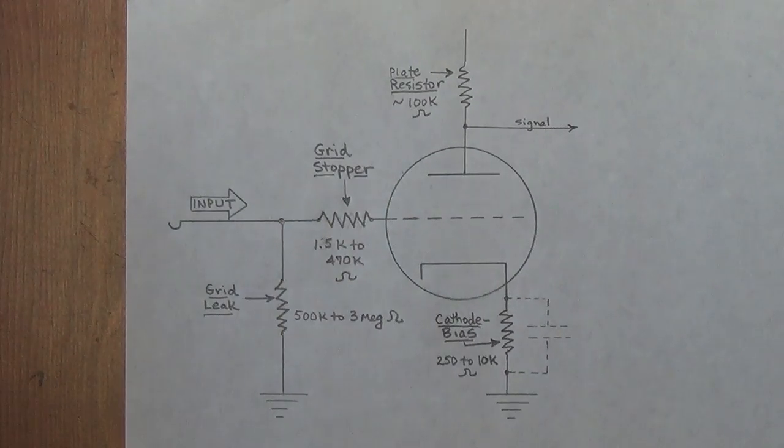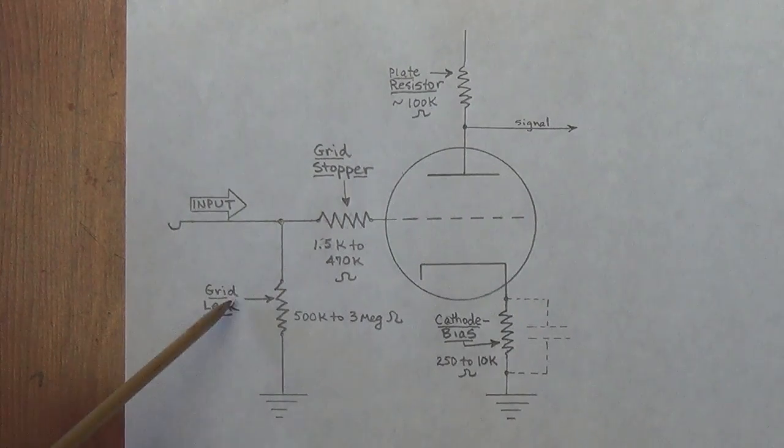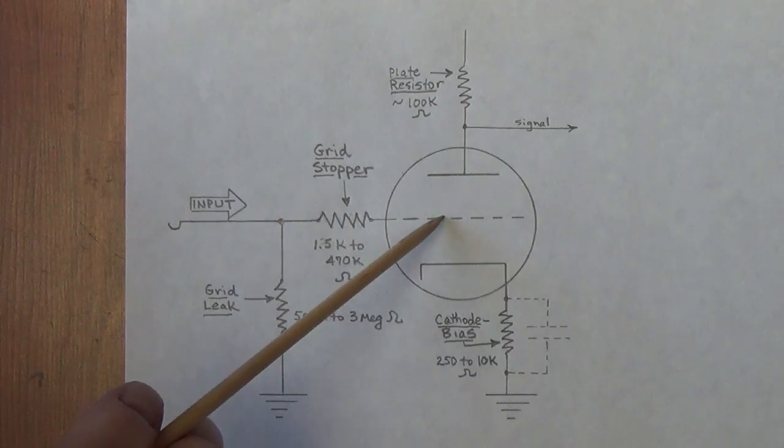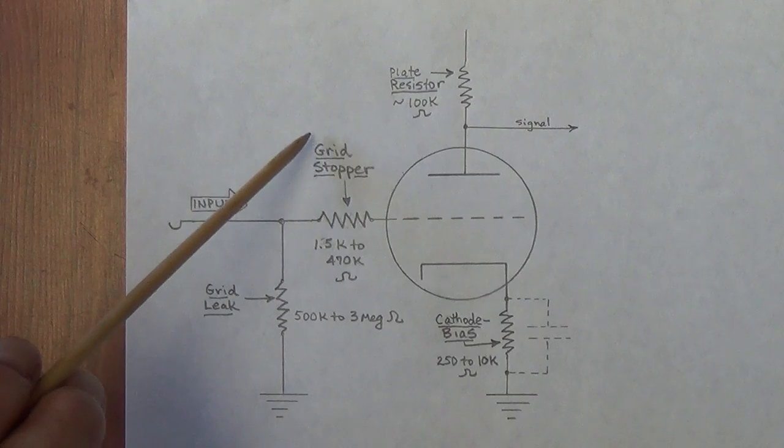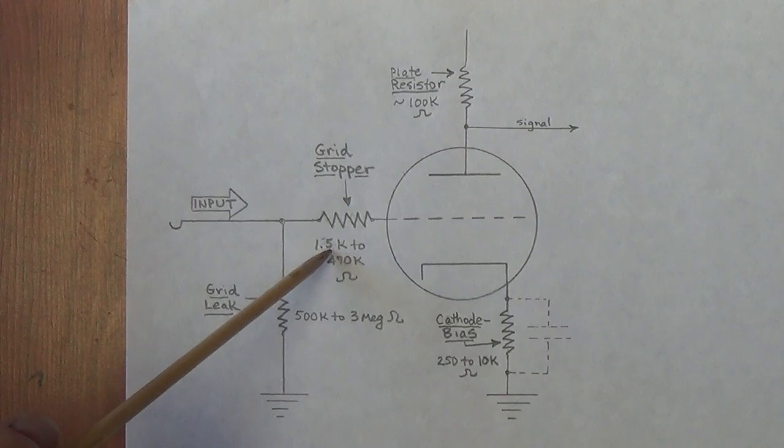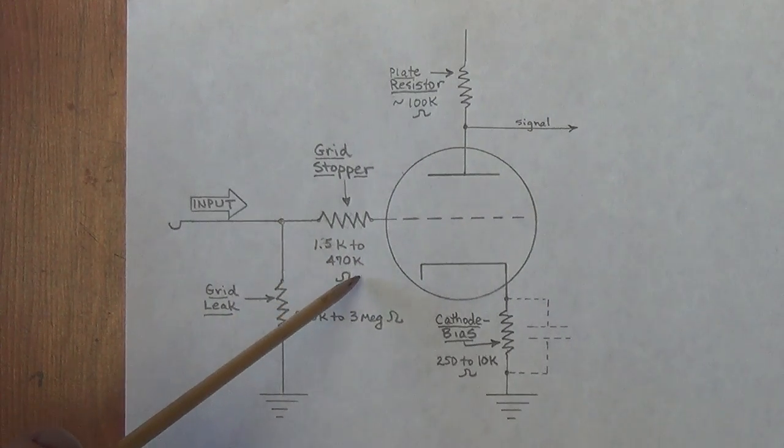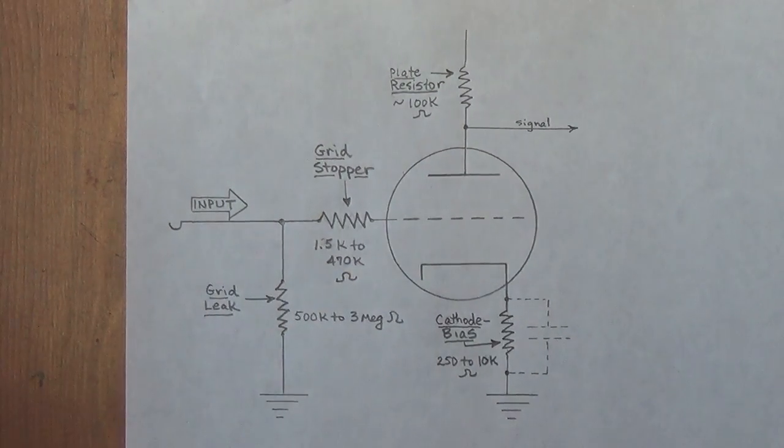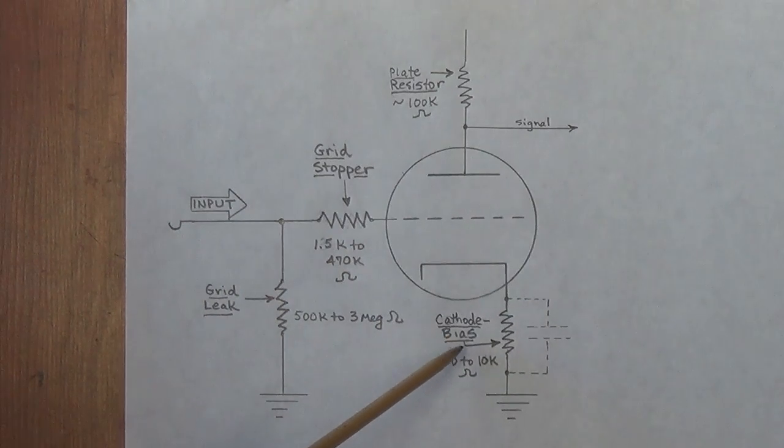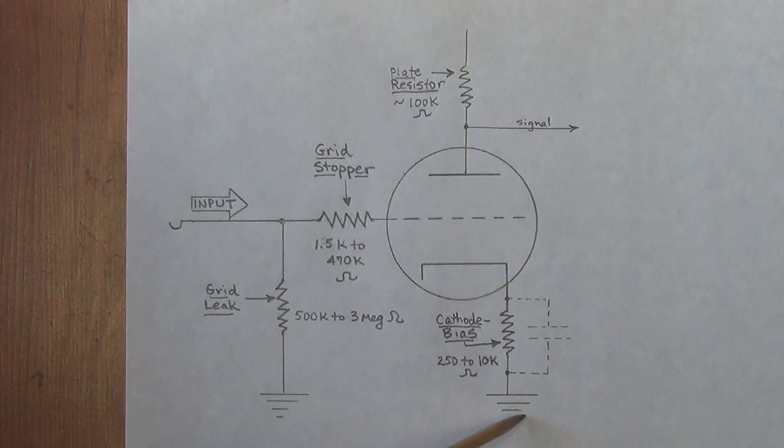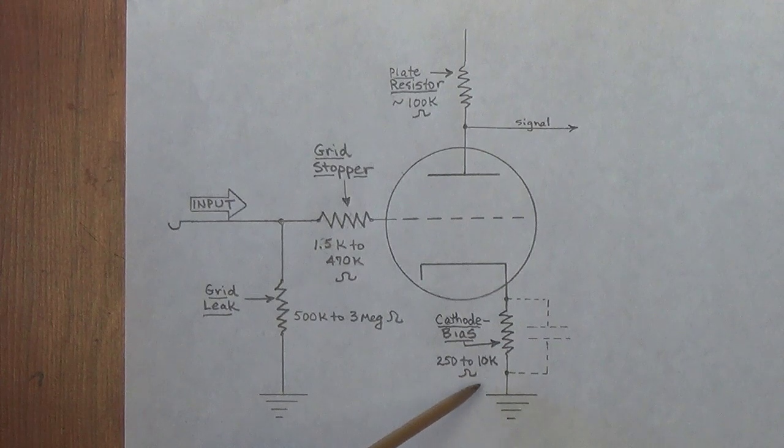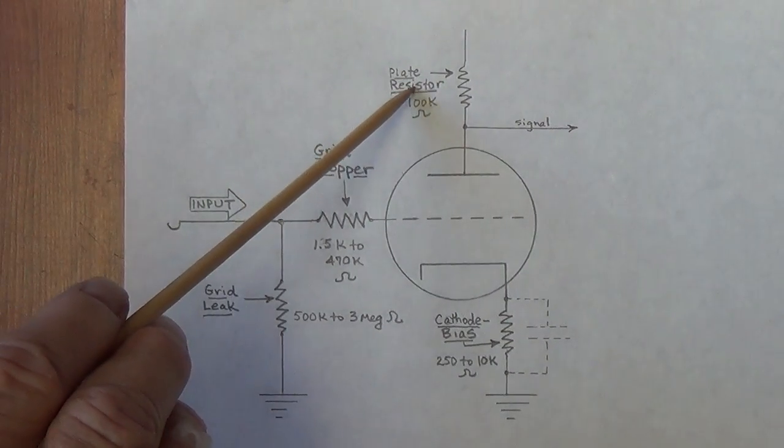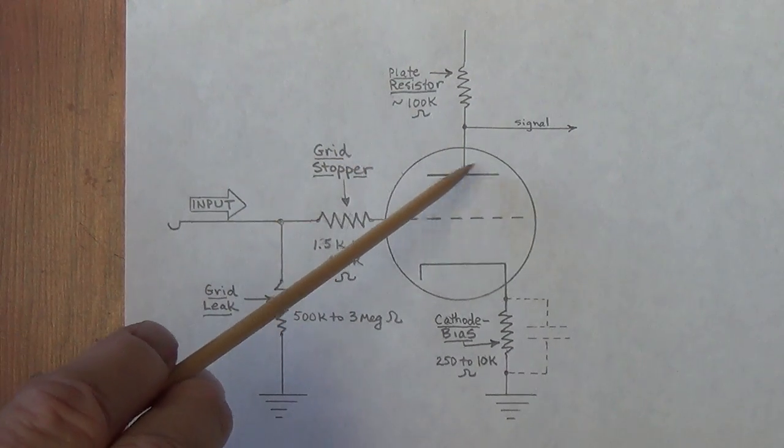To simplify things, I've drawn a diagram here showing the four resistors that we will cover. First will be the grid leak resistor, which is rather high value, between 500k and 3 meg ohms, and it is located between the grid and ground. Second will be the grid stopper resistor, ranging from 1.5k in output tubes, all the way up to 470k on preamp tubes, and it is located between the input, or the preceding stage, and the grid of the following tube.